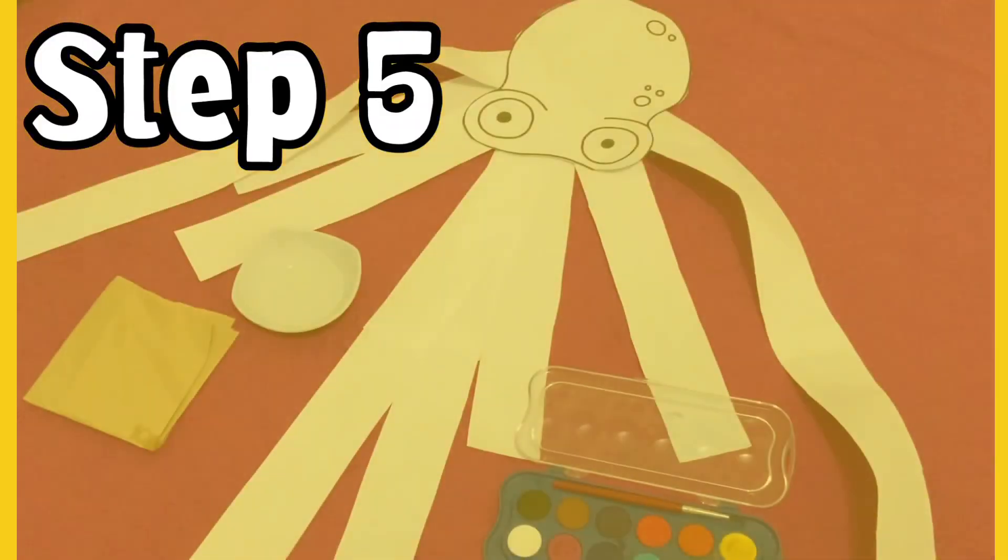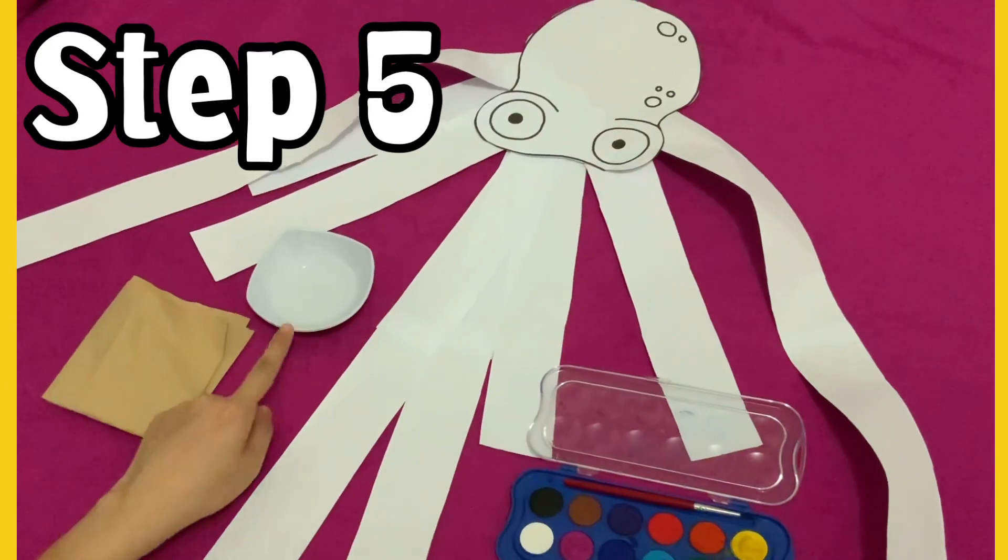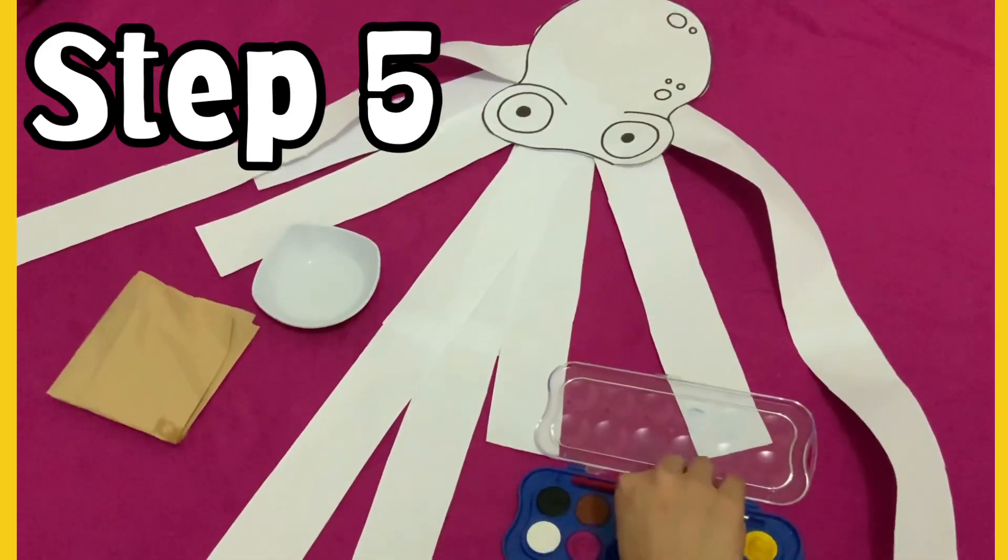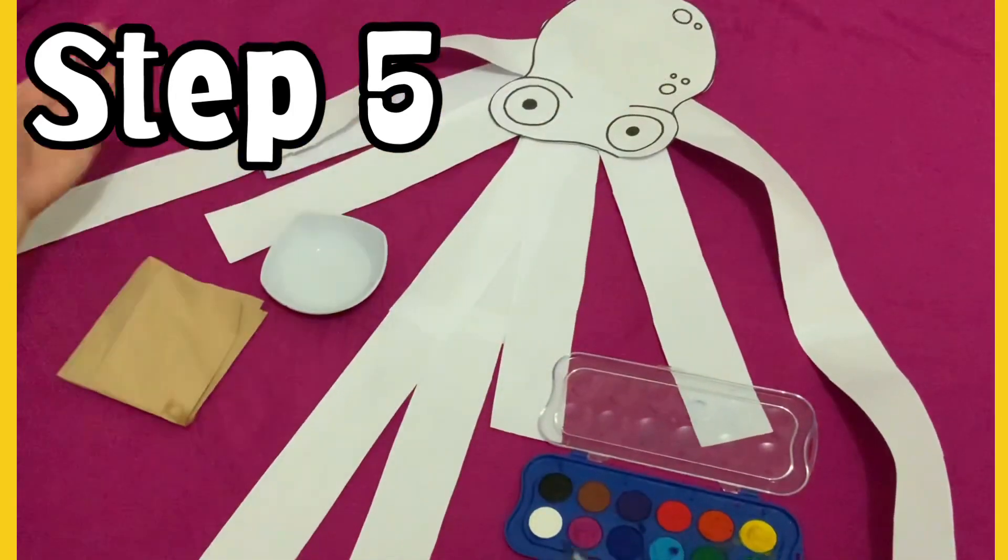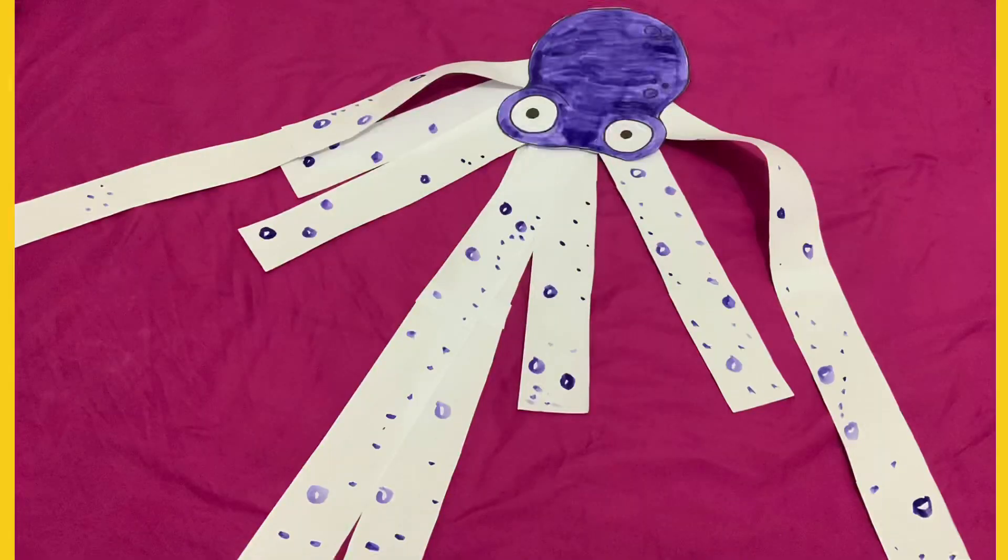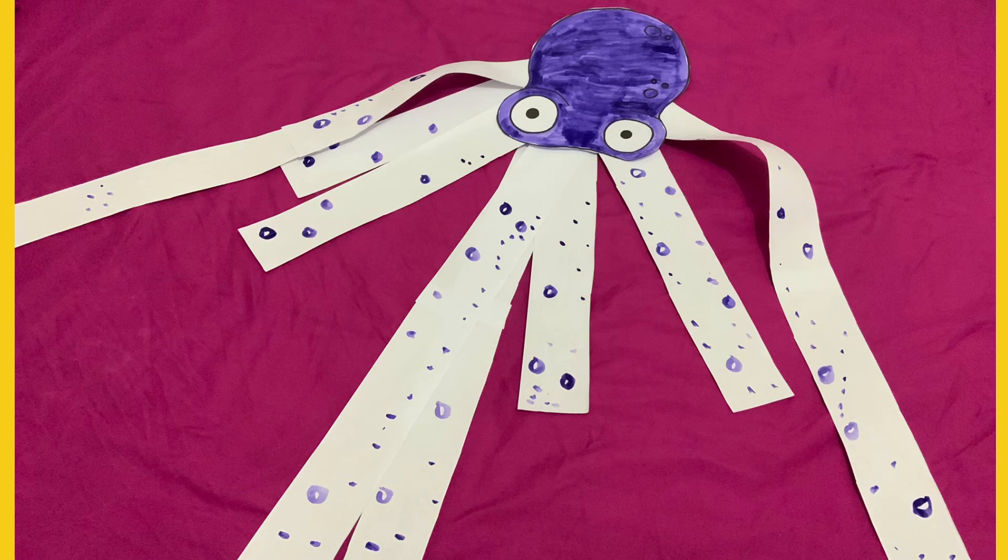For step five, I prepared a tissue paper, tap water, and of course, my watercolor. So now we're going to paint. You may choose any color that you want. And ta-da! My octopus looks just like this.